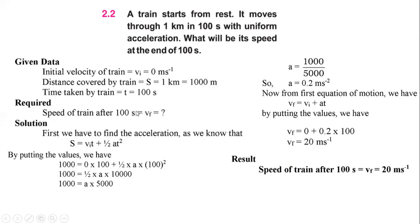Looking at the first and third equations of motion, the first equation is VF = VI + at, and the third is 2As = VF² − VI². Both equations contain acceleration, so we need to find acceleration first. The second equation of motion, S = VI·t + ½at², does not contain final velocity, so we use it to find acceleration. Putting in the given parameters, the acceleration evaluates to 0.2 meters per second squared.